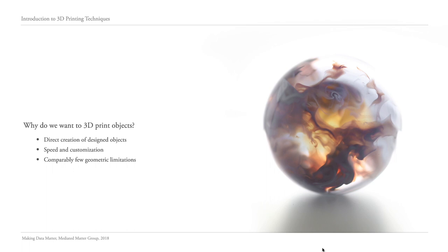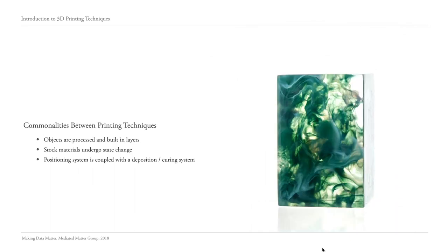It's good to think about why we want to 3D print objects in the first place, because understanding this basis makes it more clear how these technologies have evolved and what their limitations are. Objects created seem to be a very direct representation of what is in our CAD software — you design something on your computer and what comes out looks and feels like that designed object, which isn't often found in other manufacturing settings. Also, 3D printing is relatively fast, easy to customize, and has comparably few geometric limitations, allowing extremely complex objects to be made.